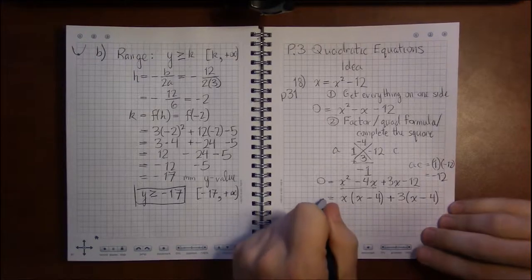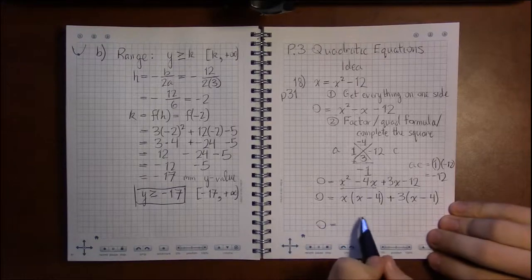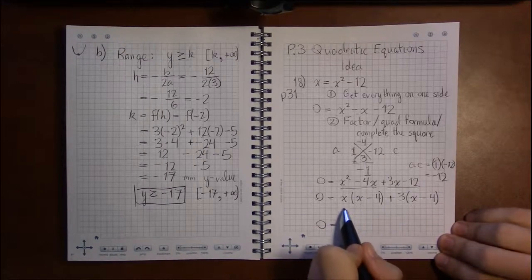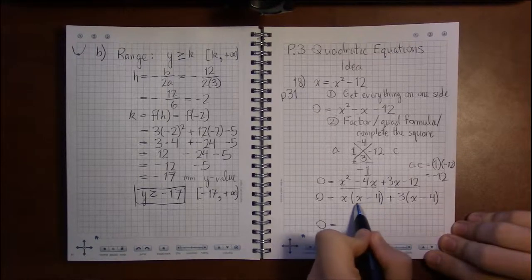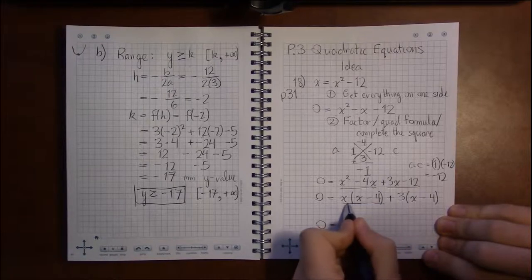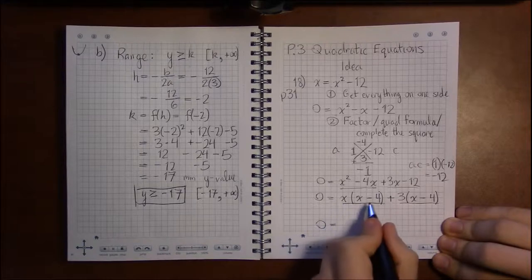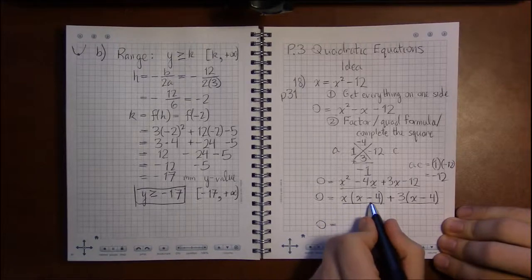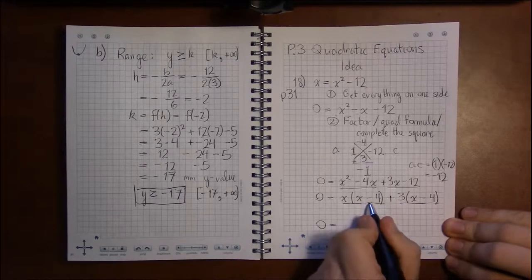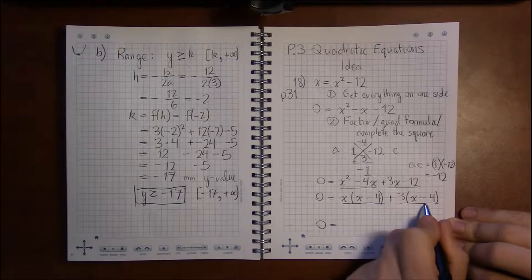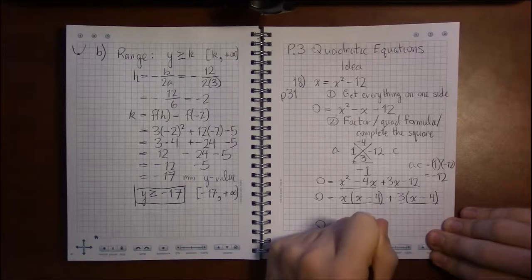And then, now I'm going to leave me some room for a bit of an explanation in the middle here. Now all I have to do is—my two terms are this and this: x times (x minus 4) and my other term is 3 times (x minus 4). Well, there's an x minus 4 on both of these, so if I pull x minus 4 out—